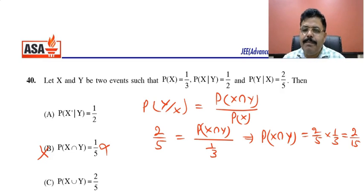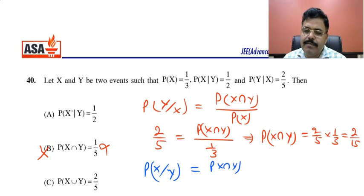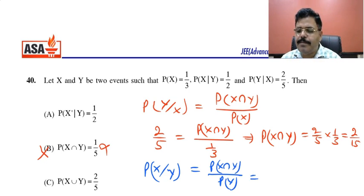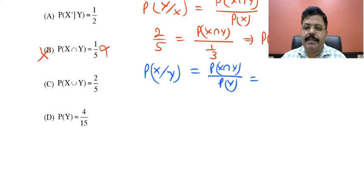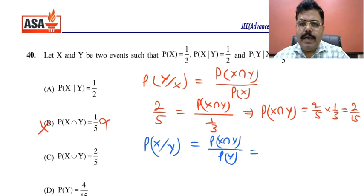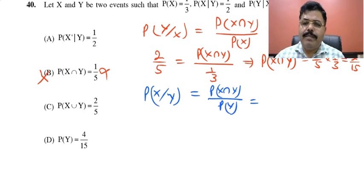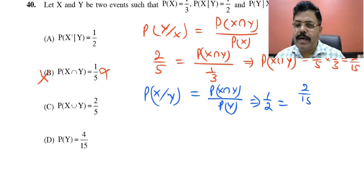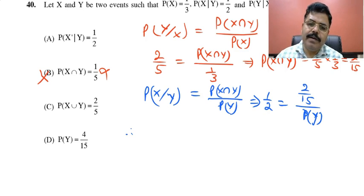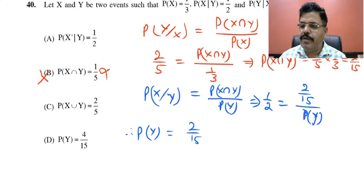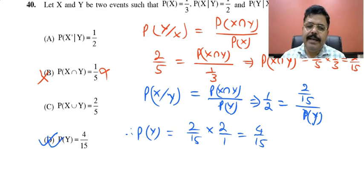Now with P(X∩Y) = 2/15 known, and P(X|Y) = 1/2 given: P(X|Y) = P(X∩Y) / P(Y), so 1/2 = (2/15) / P(Y), therefore P(Y) = 2/15 × 2 = 4/15. Probability of Y is 4/15, which is given in option D. So D is a correct answer.